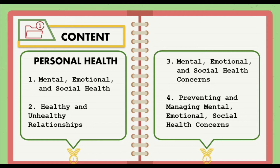Number two: healthy and unhealthy relationships. Relationships play a key part in every child or young person's well-being. Healthy relationships can help a child feel secure and supported, but unhealthy relationships can have a long-lasting negative impact. Number three: mental, emotional, and social health concerns — these affect how children cope with life's challenges and stresses. Number four: preventing and managing mental, emotional, and social health concerns. It helps children build positive social, emotional, behavior, thinking, and communication skills.